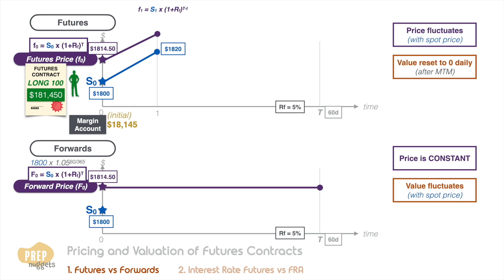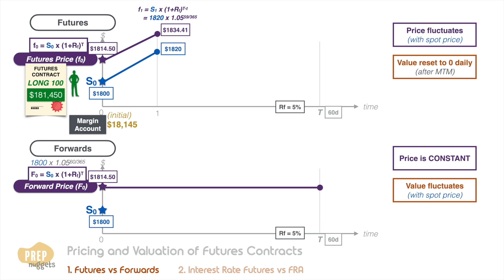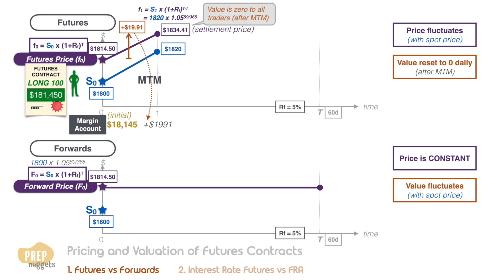What is the no-arbitrage futures price of this contract? Think of two new parties coming together to agree on a new contract, knowing that the spot price is now $1,820 and the contract has 59 days to maturity. The no-arbitrage price of the futures contract should be this amount. Assuming that is the settlement price, this is an increase of $19.91. As the trader has a long position in 100 contracts, the mark-to-market process will add $1,991 to the trader's margin account. At this price, the value of the contract is zero to all traders.